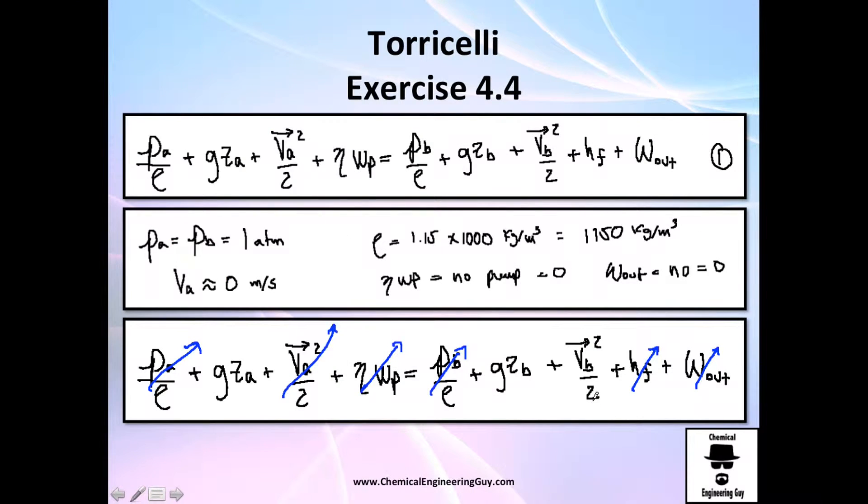But anyways, in this case, we will make the assumptions, so pressure, same pressures, pressure of A equals pressure of B, it's one atmosphere, or atmospheric pressure. The velocity in A, I tell you, you could say it's almost zero, or maybe you could say it's one centimeter per minute, or something like that, which will be almost zero. The density is just to calculate that of water times 1.15, and you get 1115 kilograms per cubic meter. No pump, no work out, so take this away. And very nice, we have it right here.